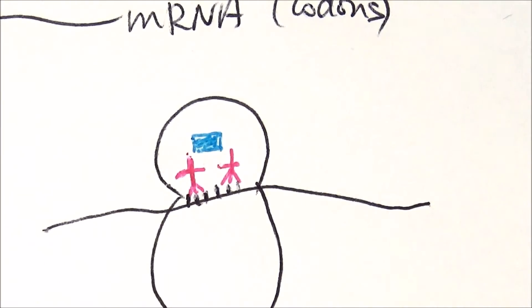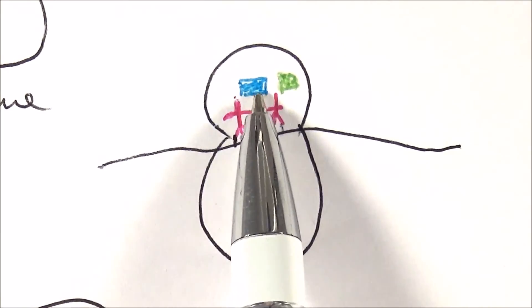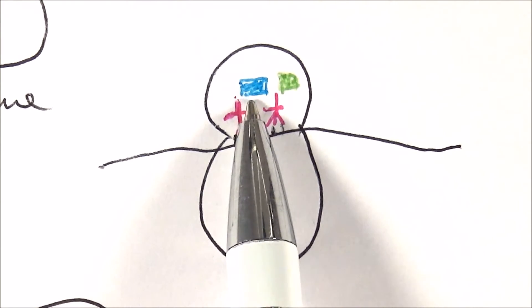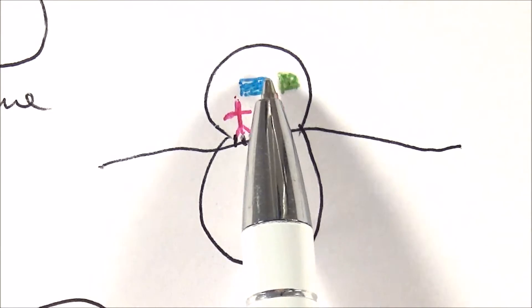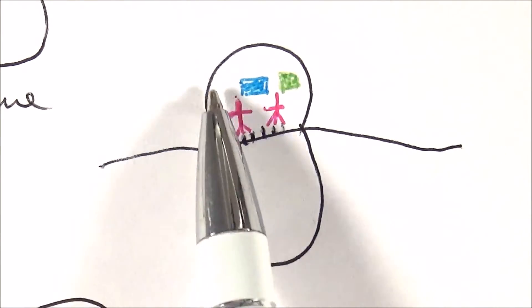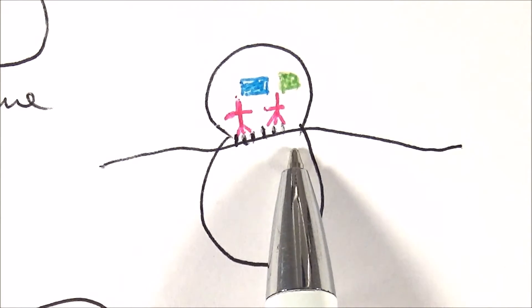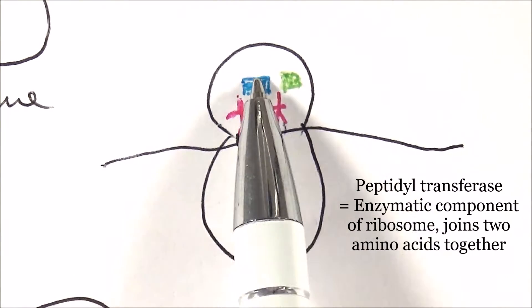It carries a different amino acid. What happens next is that this amino acid is transferred to the next amino acid by forming a peptide bond. This process is catalyzed by an enzymatic component of the ribosome called peptidyl transferase, which transfers the peptide.